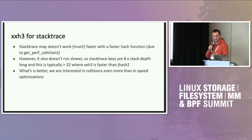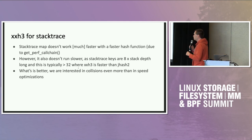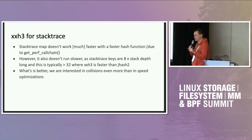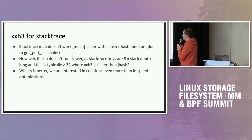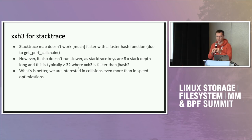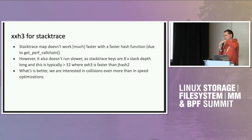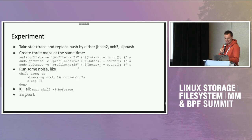The original intent was to see if new generations of hash functions behave better for the stack trace map. I actually didn't see any difference — it doesn't make stack trace faster because most time is spent in the getperf call chain, about 95% of the time. So using a new hash function makes stack trace only about 5% faster. It's better than before, but not a dramatic change.